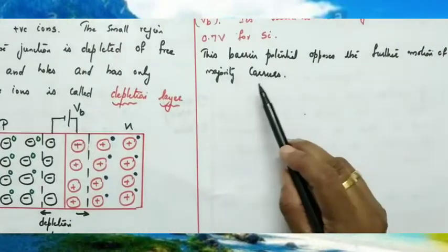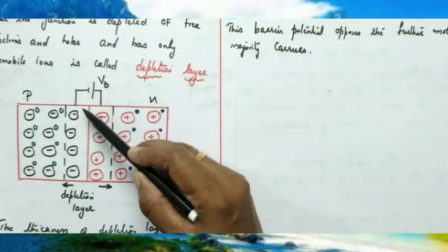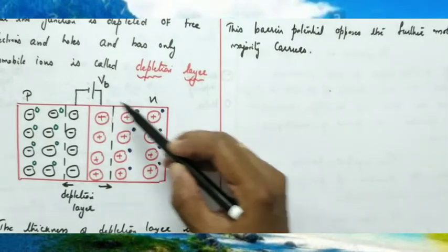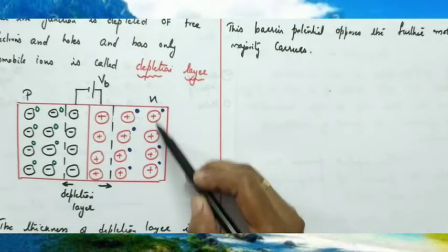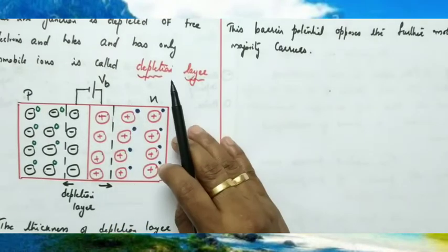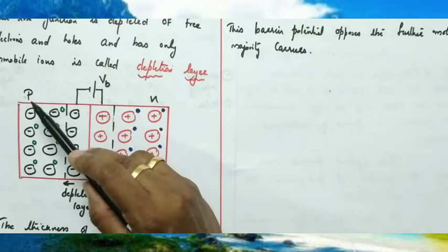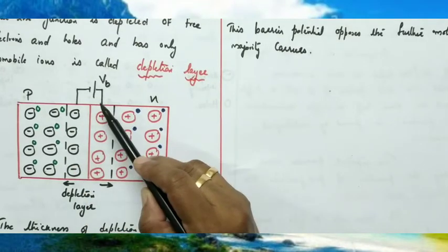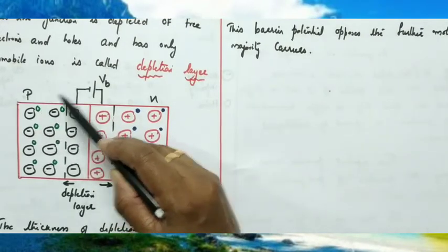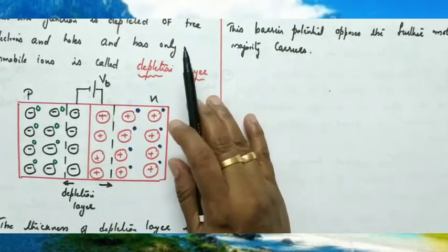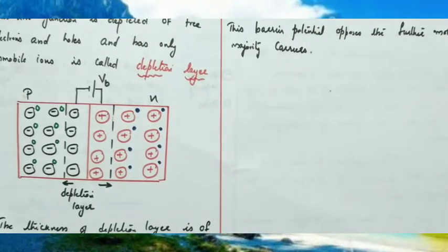The barrier potential opposes the further motion of majority carriers. If electrons tend to move towards the P region, there is a strong negative potential there, so electrons cannot overcome it and reach the P region. Similarly, holes in the P region cannot move towards the N region due to the strong positive potential. After formation of the barrier potential and the depletion layer, the further motion of majority carriers is completely stopped.